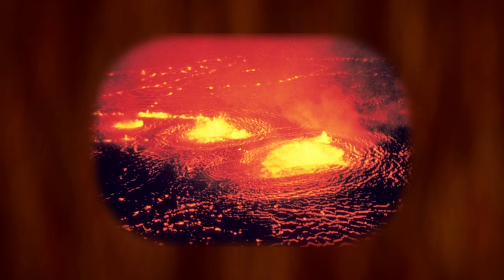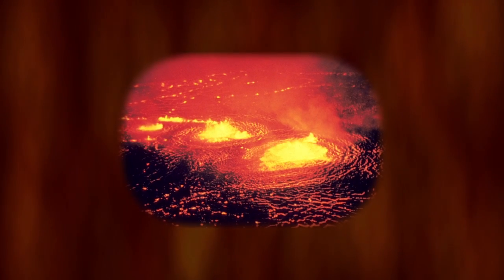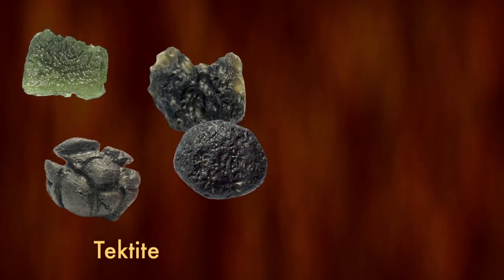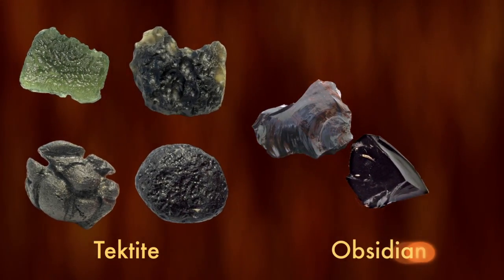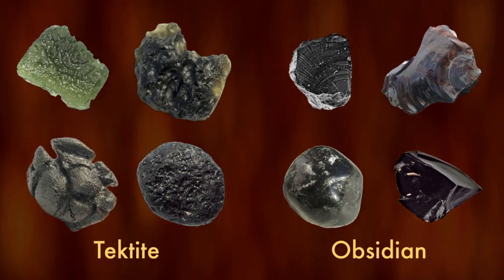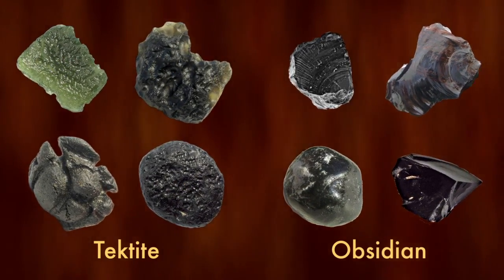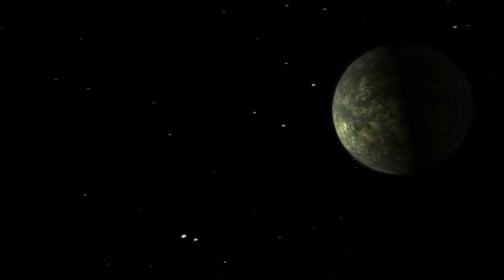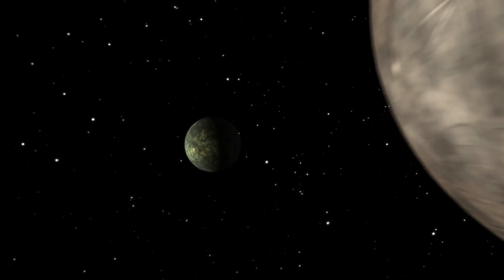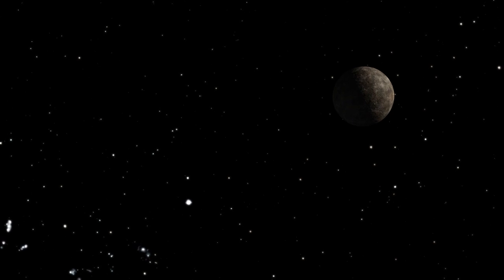What's strange is that tektite and obsidian are formed from molten materials. Tektites are hardened chunks of lava found around meteor impacts on Earth, and obsidian is volcanic glass. Vaporized rocks can form silicon monoxide gas. You don't get this kind of material by just smashing a couple of asteroids together. The evidence suggests something much more cataclysmic.